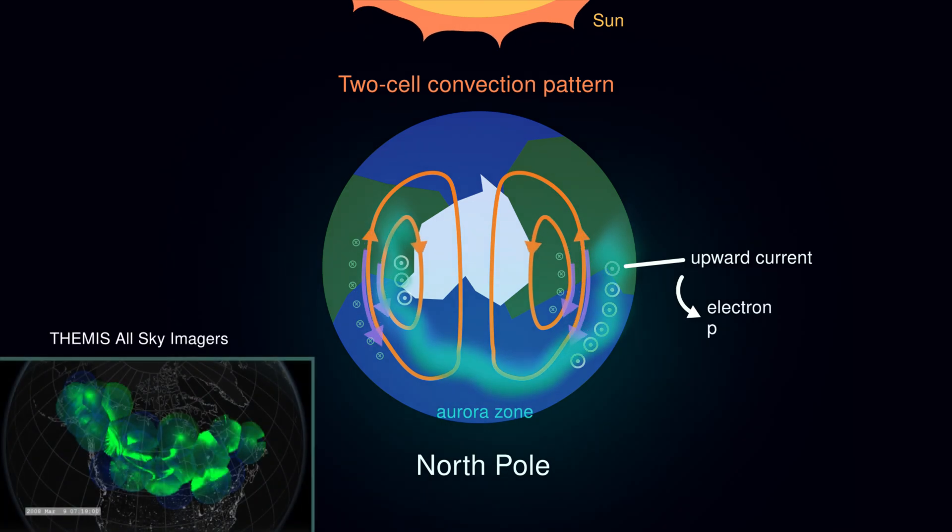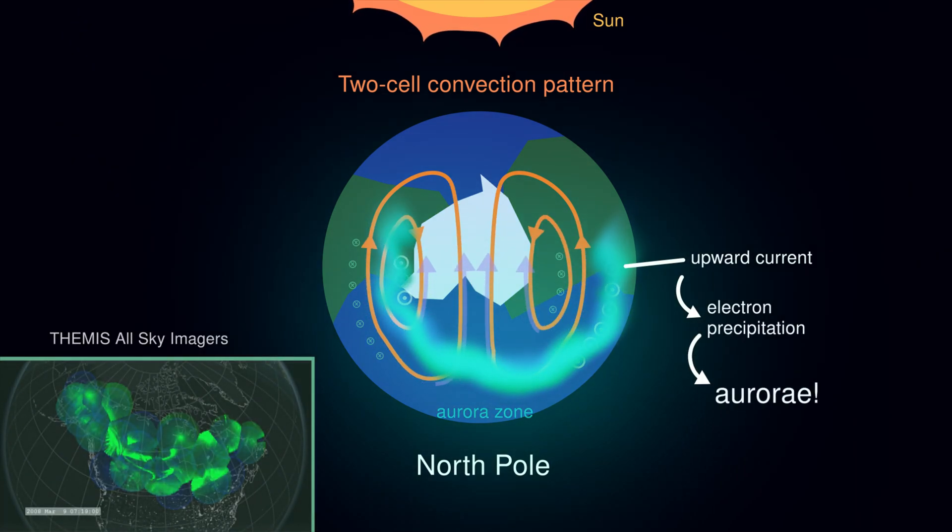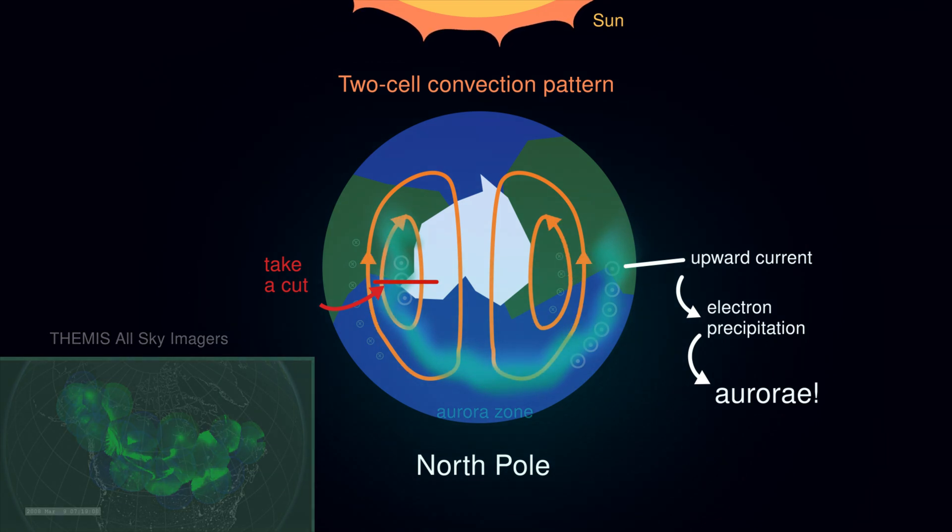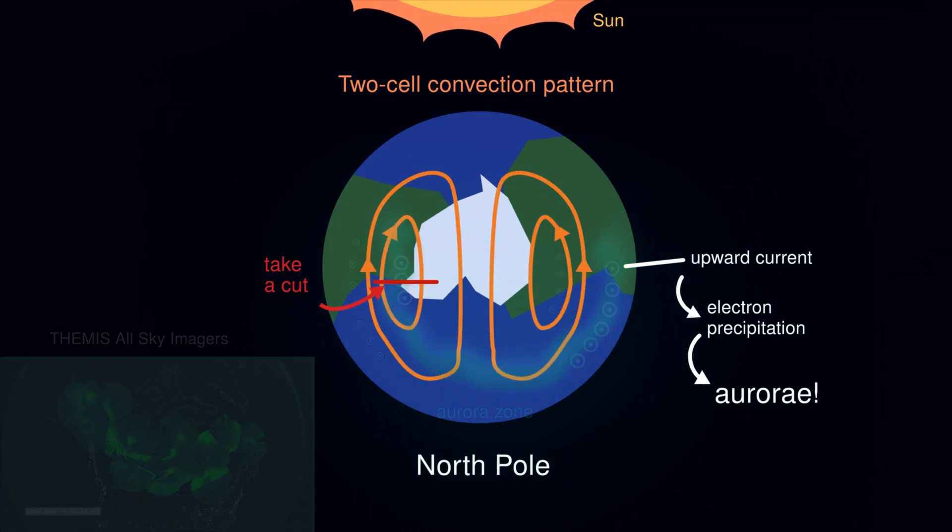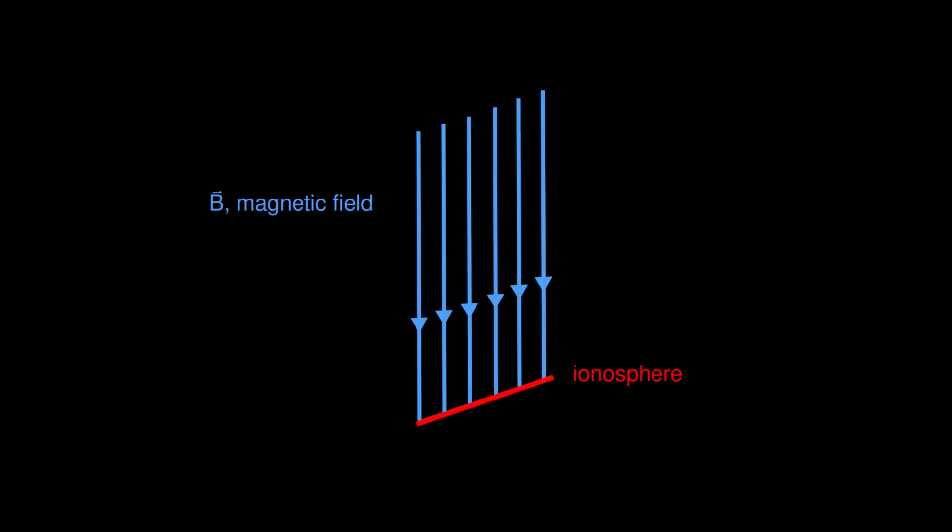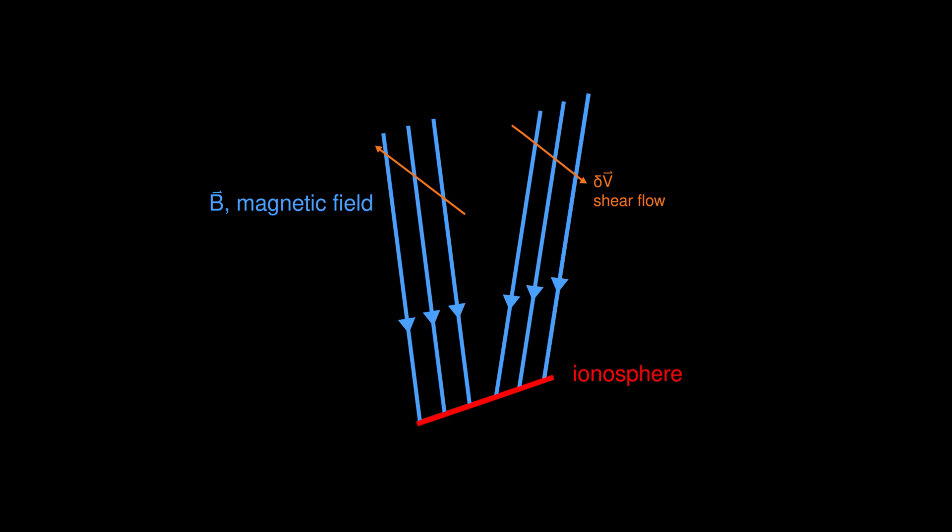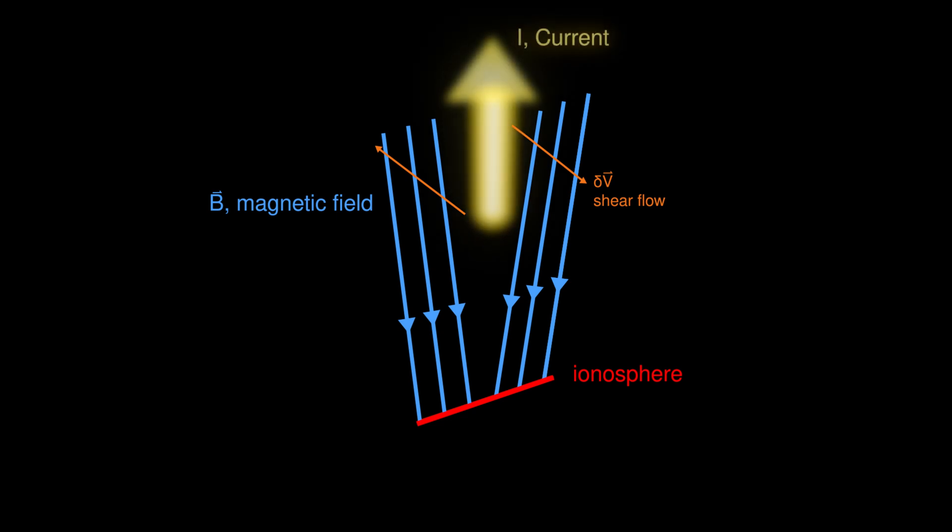These upward currents bring us aurorae. To better illustrate this process, let's take a cut across this red line and see this process from the horizontal direction. Earth's dipole field enters the polar cap at the north. With the shear flow associated with the two-cell convection, the field lines on two ends are dragged and bent in the opposite way.